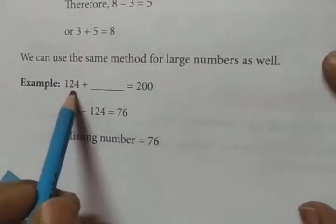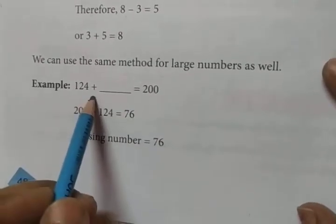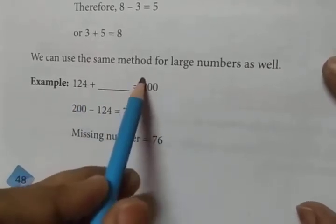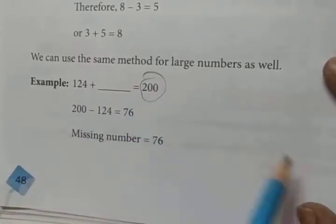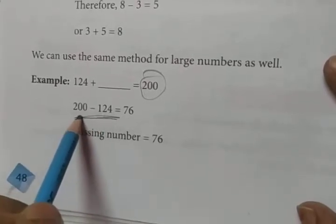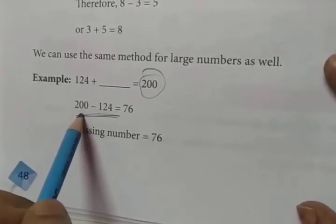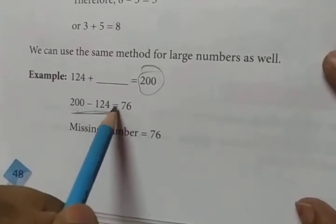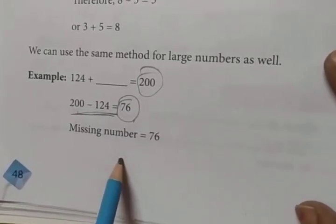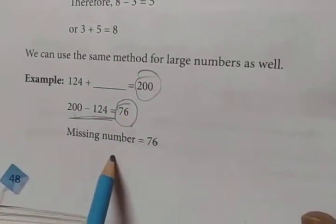We can use the same method for large numbers as well. For example, 124 plus what equals 200? What should be added to 124 to get the result 200? We will do the same thing — we subtract 124 from 200, and it gives us the answer 76. So this is the only method to get the answer. Is it clear, class?